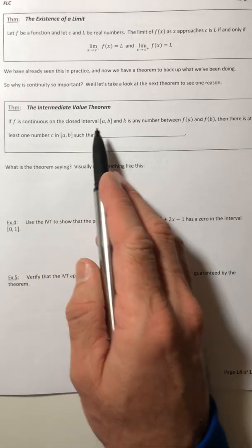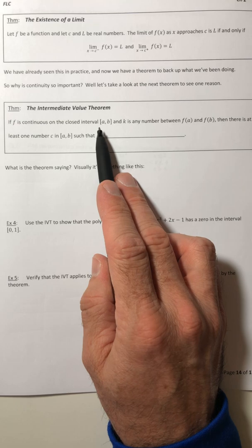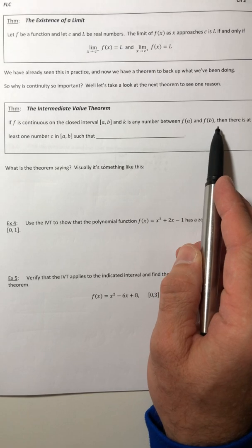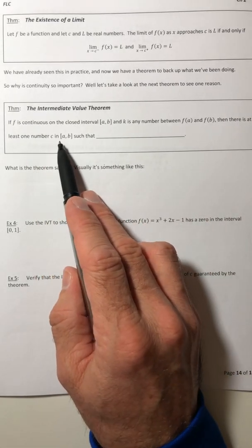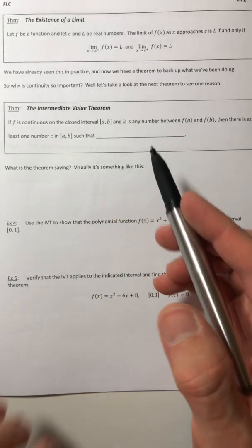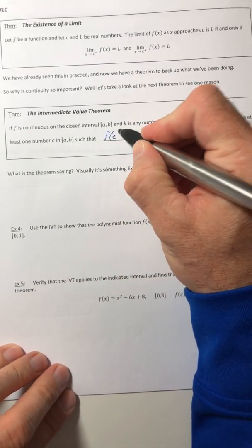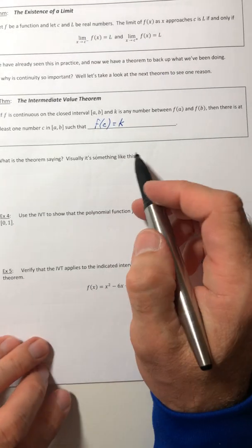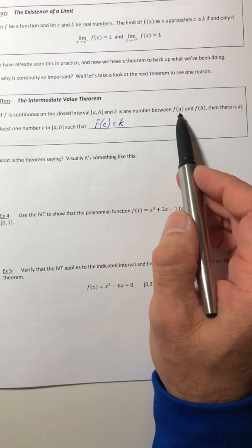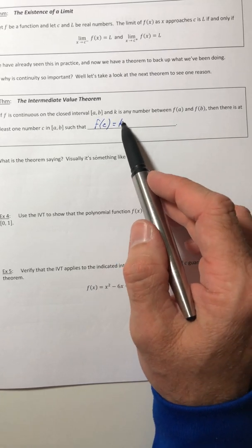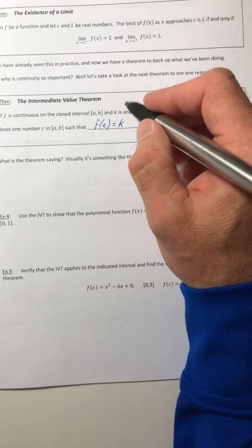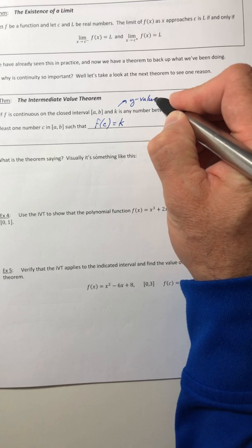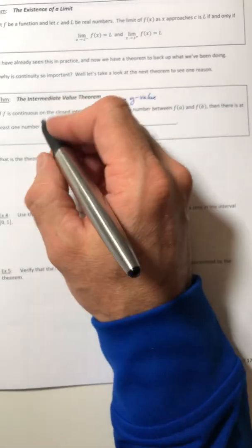So let's see what it says. If f is continuous on the closed interval from a to b, and k is any number between f(a) and f(b), then there is at least one number c in the interval a to b such that f(c) is equal to k. So k is any number between f(a) and f(b), which means that the k is really a y value. The c is the x value.